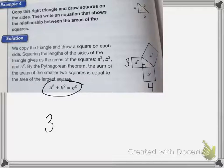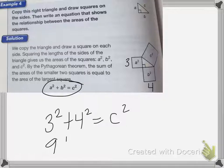So it would be 3 squared plus 4 squared equals C squared. So 3 squared is 9 plus 4 squared is 16 equals C squared.